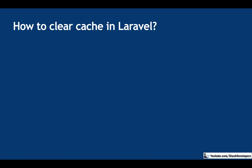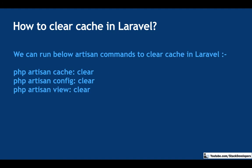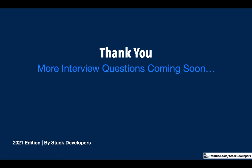How to clear cache in Laravel? This is a basic question you must know. You may need to clear cache online — if you have terminal access — or offline using the command prompt or Git. You can run the following Artisan commands to clear cache in Laravel: php artisan cache:clear, php artisan config:clear, and php artisan view:clear. These three commands clear the cache and can be run both offline and online.